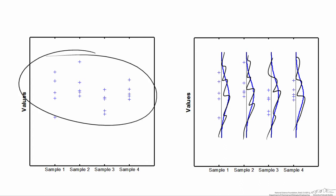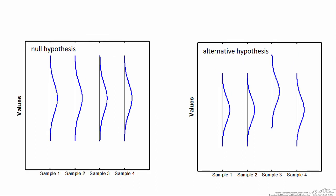In reality, all you get to see are the data points that you measured in your study. With analysis of variance, we have a null hypothesis in which the population means for each of these samples — mu1, mu2, mu3, and mu4 — are equivalent. Analysis of variance will provide some evidence as to whether or not you could refute the null hypothesis, and the alternative hypothesis is that at least one of the sample means differs from the others. Here's an example of a case in which the alternative hypothesis is true: mu3 differs from mu1, 2, and 4.